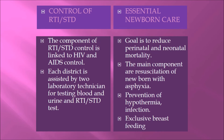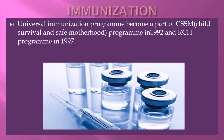Each district is assisted by two laboratory technicians for testing blood and urine for reproductive tract infections and sexually transmitted diseases. Essential newborn care has the goal of reducing perinatal and neonatal mortality; its main components are resuscitation of newborns with asphyxia, prevention of hypothermia, prevention of infection, and exclusive breastfeeding. The Universal Immunization Program became part of the Child Survival and Safe Motherhood program in 1992 and the RCH program in 1997.